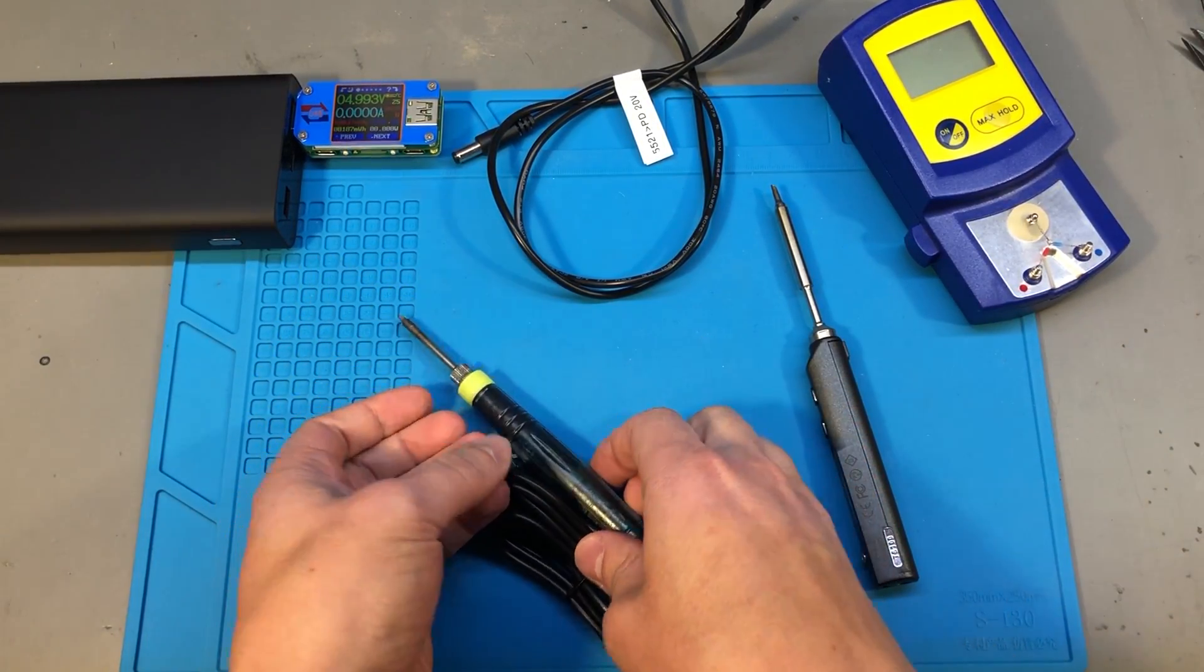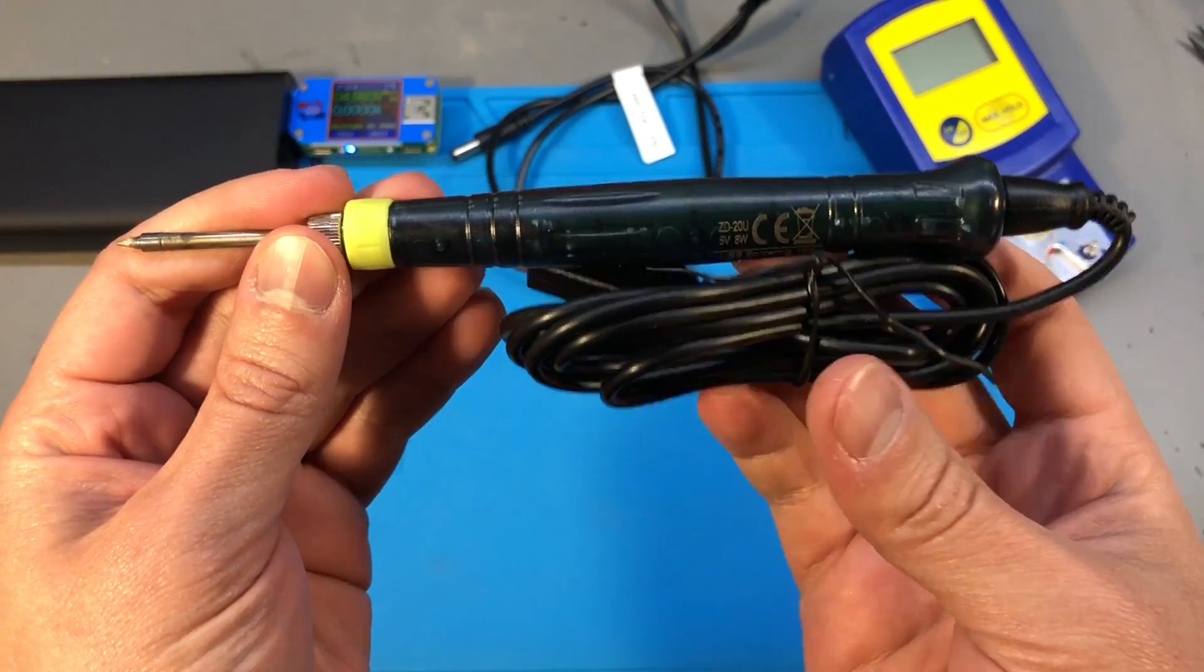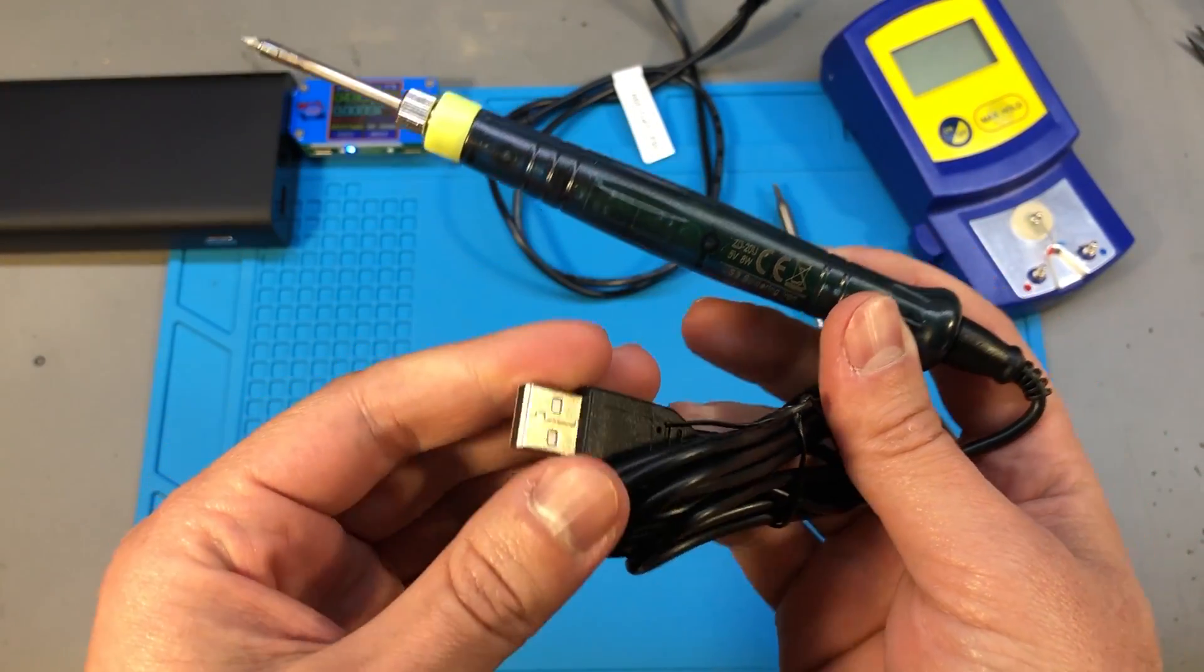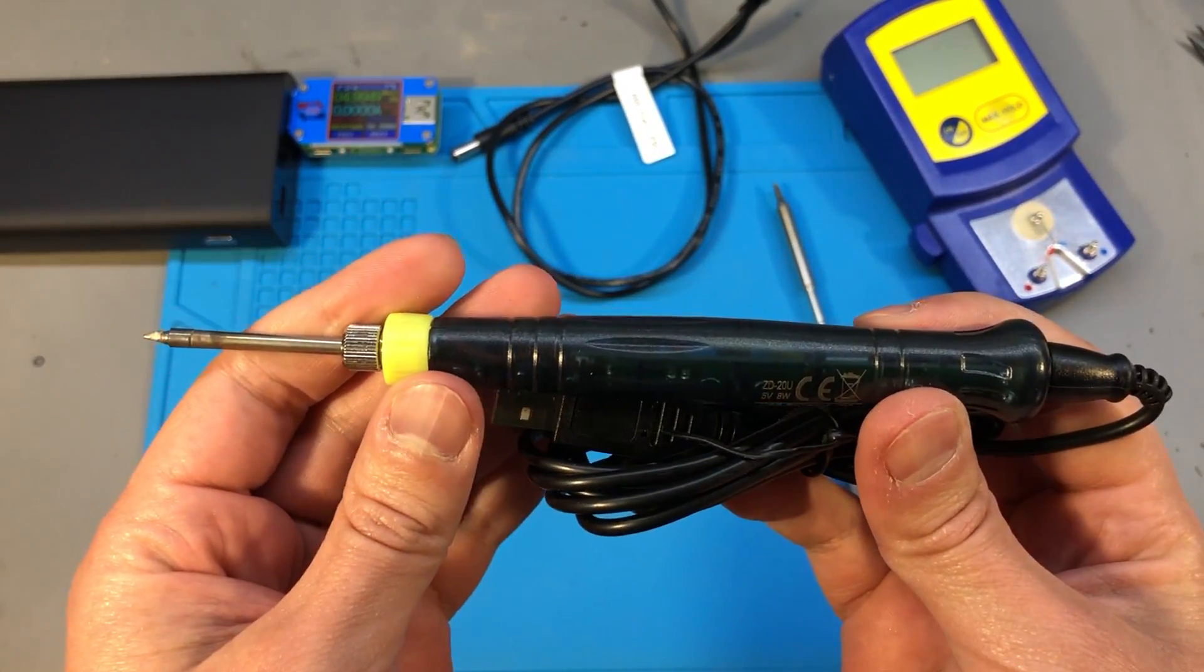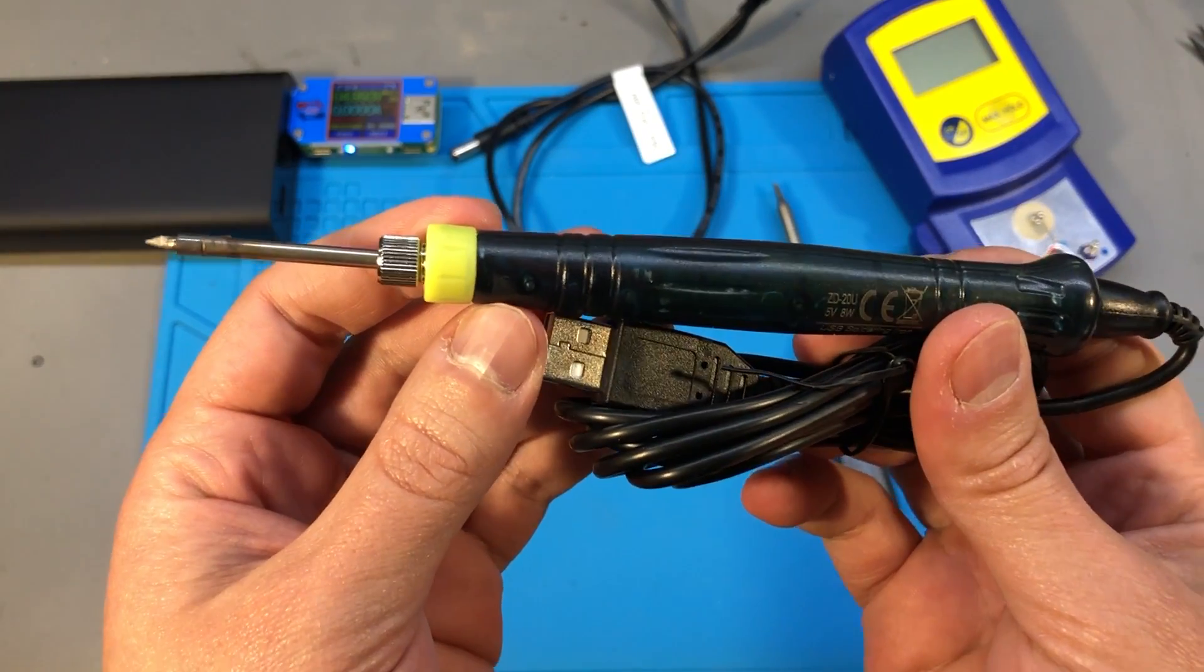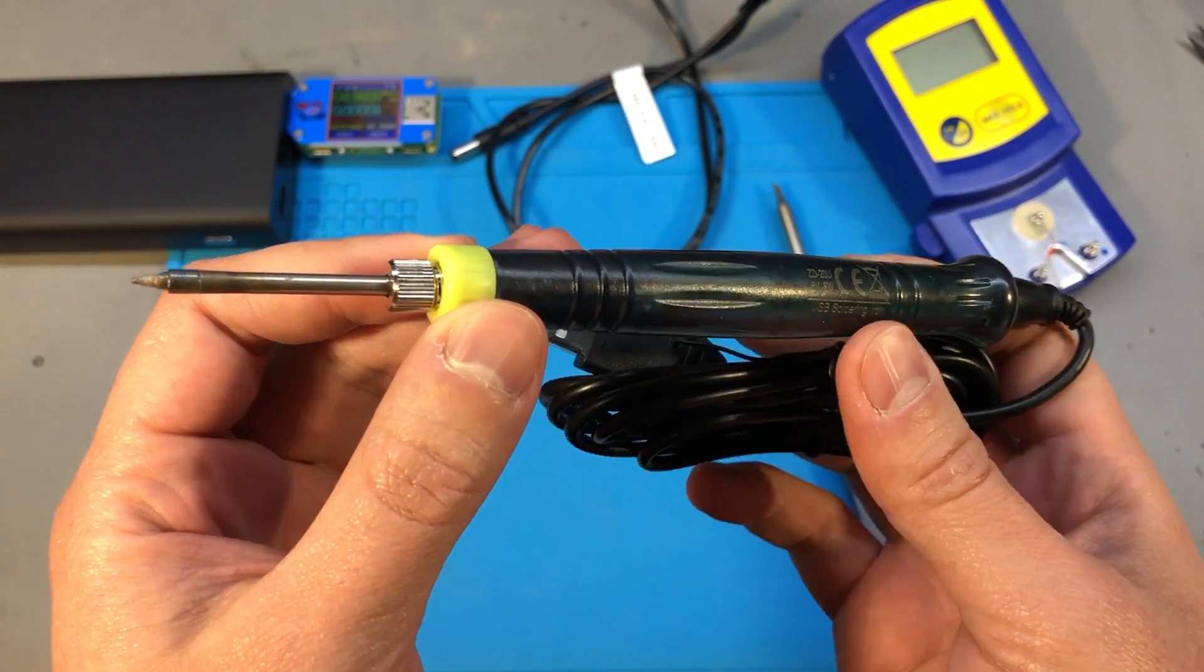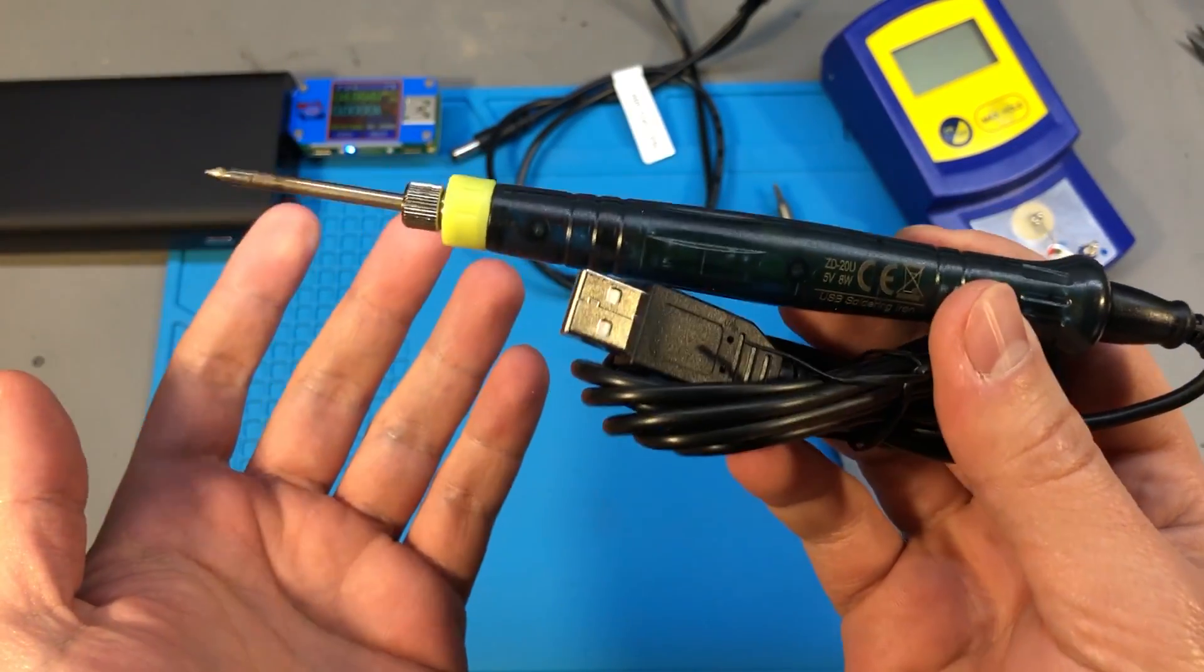Now you can get USB powered soldering irons like this one for about 6 dollars. It's rated for 8 watts, it takes a 5 volt USB input and you can plug this into any power bank to fix a solder joint remotely. I've used this a couple of times while doing electrical work on my car and it was very convenient to use.